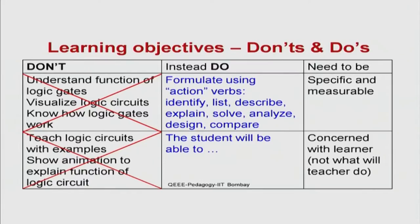Let us summarize the two important rules for writing learning objectives. First, use specific action verbs such as: identify, list, describe, explain, solve, analyze, and so on — it would be worthwhile to copy this list down. Second, start the sentence with 'the student will be able to.' The moment you start the sentence that way, the learning objective automatically becomes concerned with the learner and not the teacher. These are the two rules for writing learning objectives.